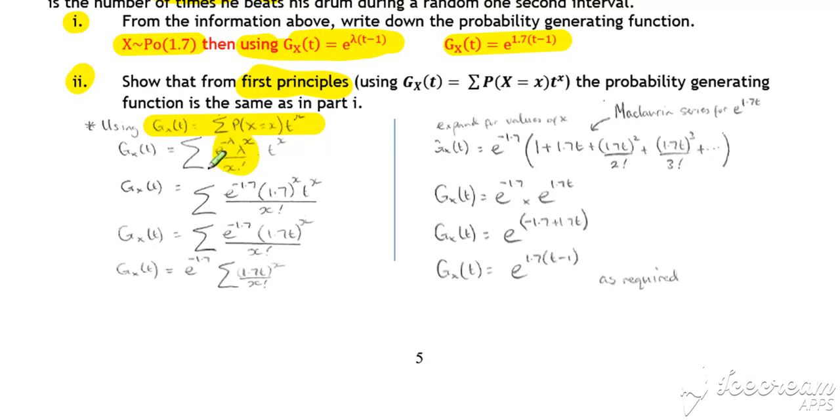That's your probability formula for a Poisson multiplied by t to the x. So, in this case, substitute lambda into that equation, so substitute lambda for 1.7. And again, like last time, bring now the t inside the bracket, so incorporate the t inside the bracket.